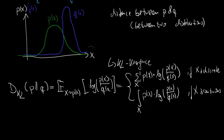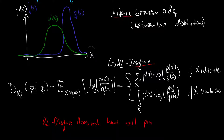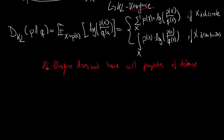You might ask yourself: this is called a divergence, but we actually wanted to calculate a distance. It is called a divergence for a reason — this particular expression does not have all the properties of a distance. So the KL divergence does not have all properties of a distance measure, which is why we don't call it a distance. But conceptually it does something similar: it allows us to make an informed judgment on how far two distributions are apart.